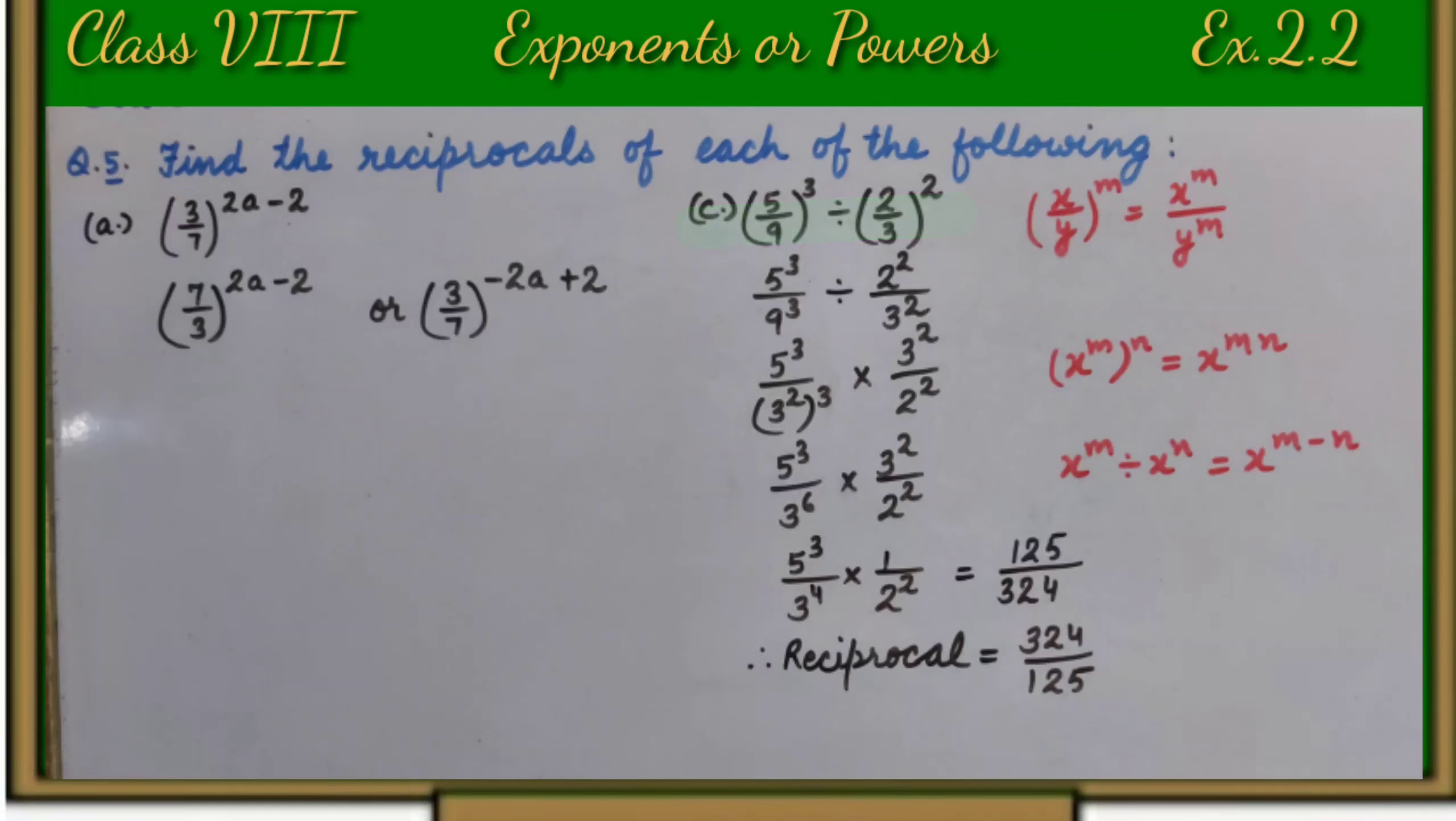Part c: 5 upon 9 whole raise to power 3 divided by 2 upon 3 whole raise to power 2. First of all, we will solve this sum.